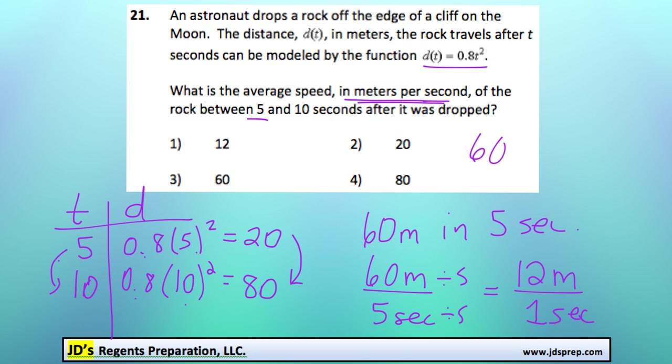You may have also seen it like this, 60 meters per 5 seconds, and that would become 12 meters per second. And so it looks like that means our solution is option number 1.